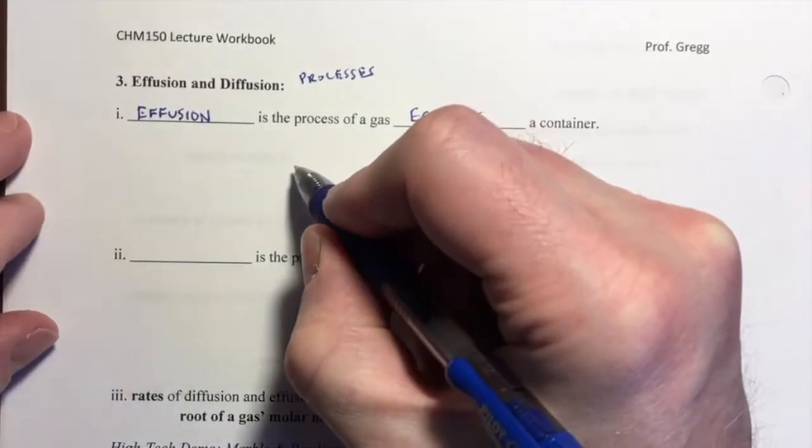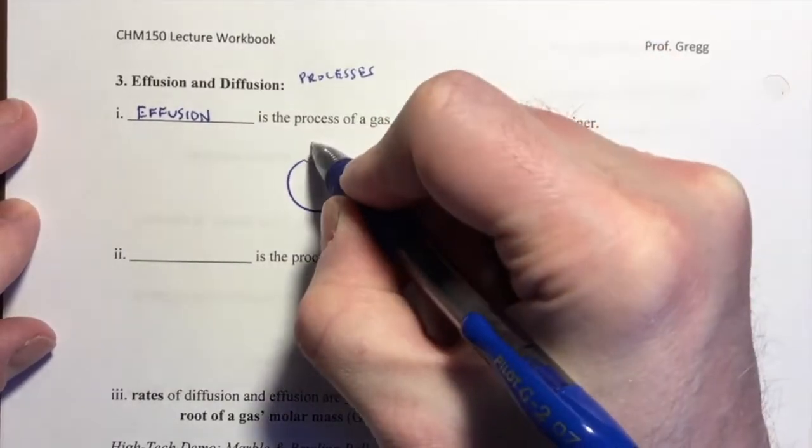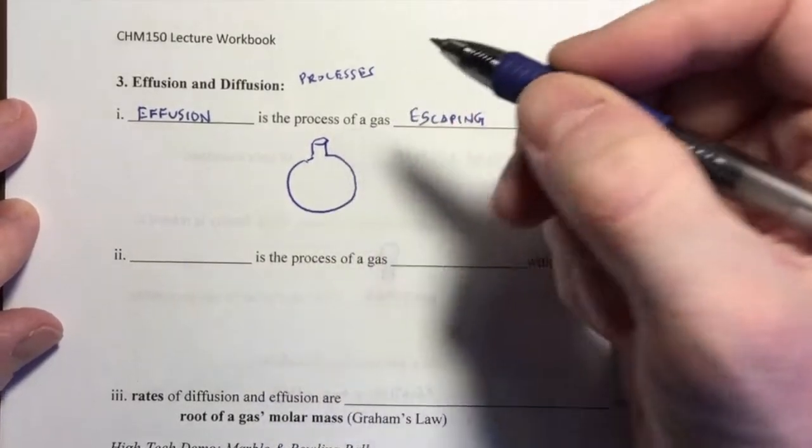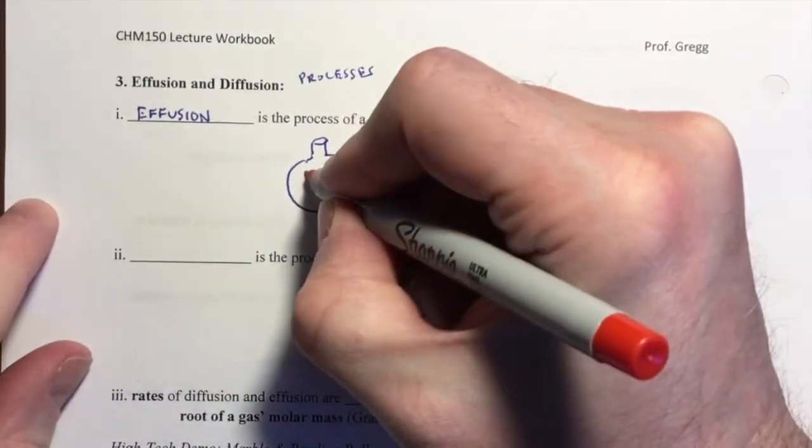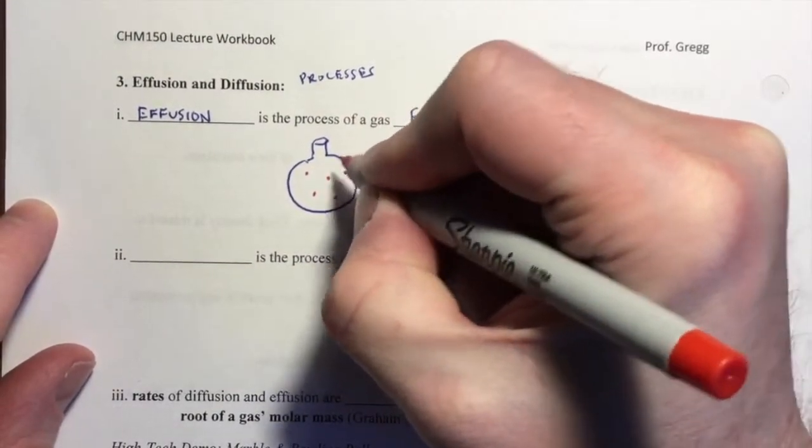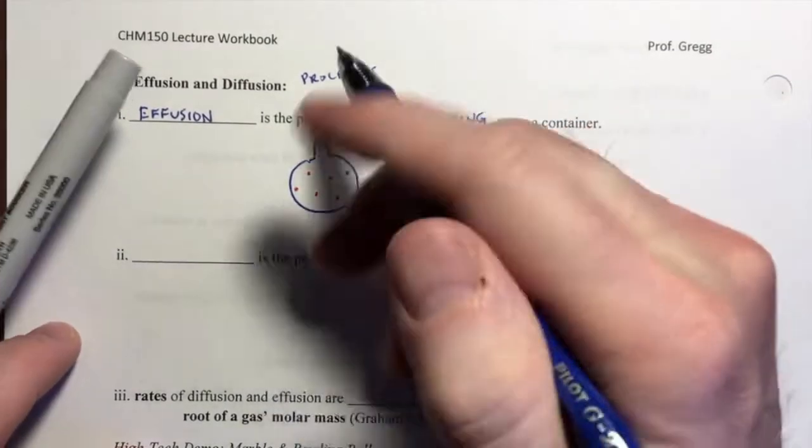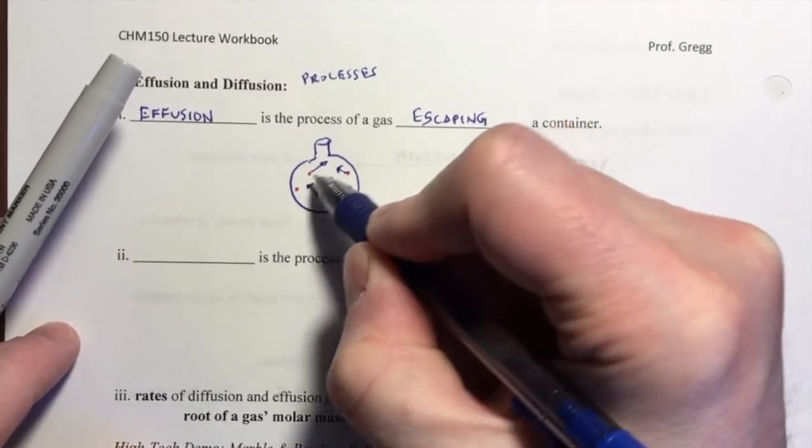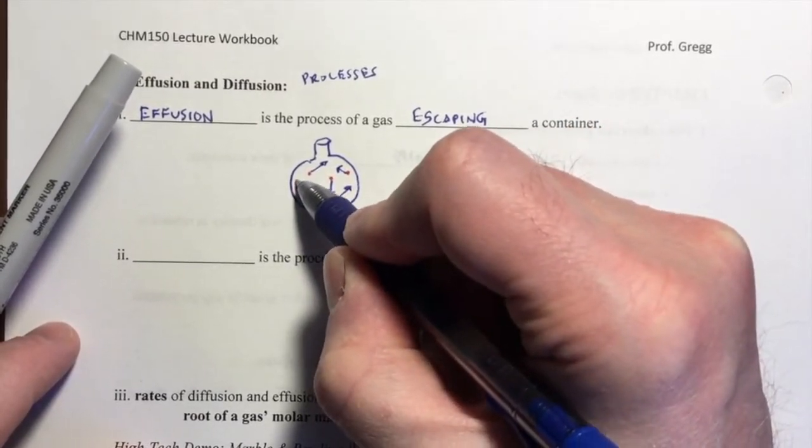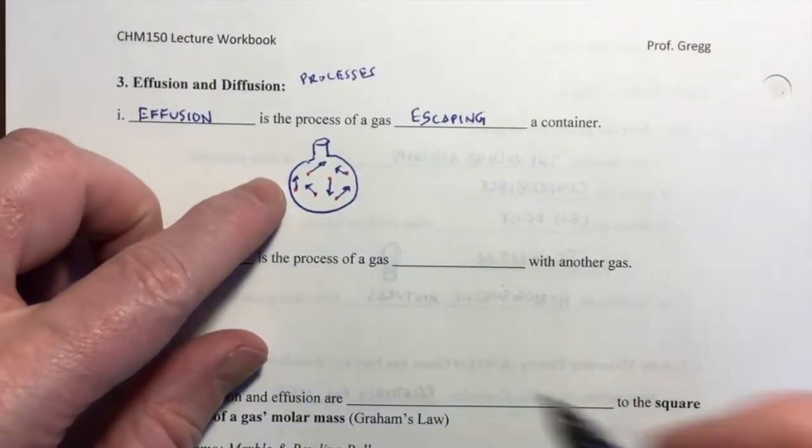Let's just draw a simple diagram here. I'm going to make my gas container a nice round bottom flask. We know that if I have gas particles inside this container, again, we can't see them, but we know that they're there. And we know that they are bouncing around, they're moving all around in a random manner all over the place.